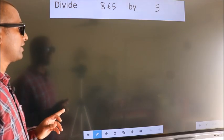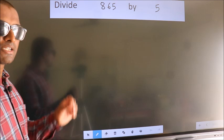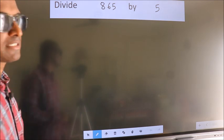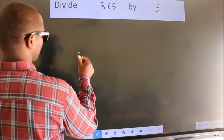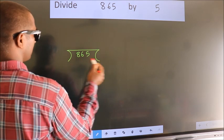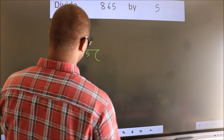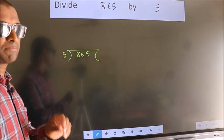Divide 865 by 5. To do this division, we should frame it in this way. 865 here, 5 here. This is your step 1.